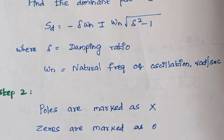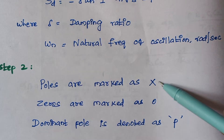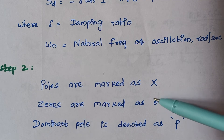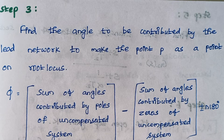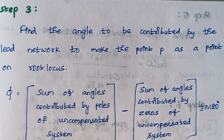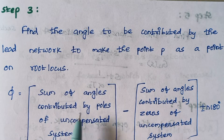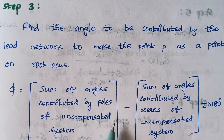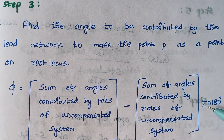Step 2: Poles are marked as crosses and zeros are marked as small circles, and dominant poles are denoted by the letter p. Step 3: Find the angle contributed by the dominant pole. Pi is given by the sum of angles contributed by poles of the uncompensated system minus the sum of angles contributed by zeros of the uncompensated system, plus or minus n times 180 degrees.